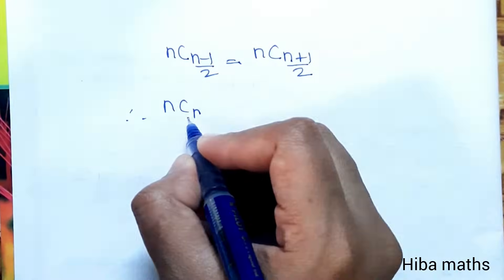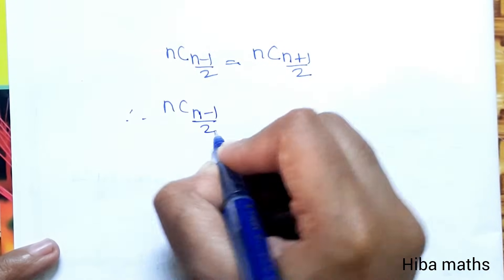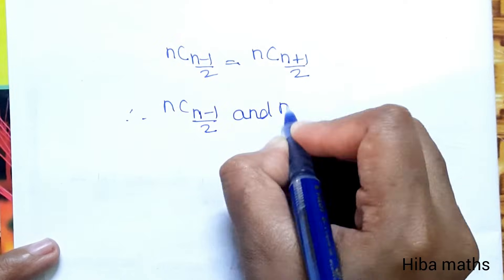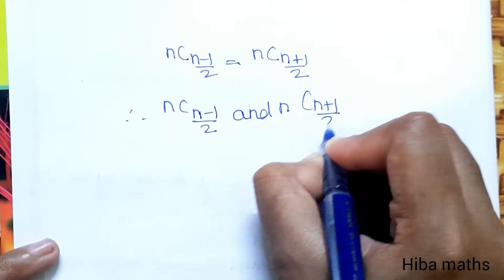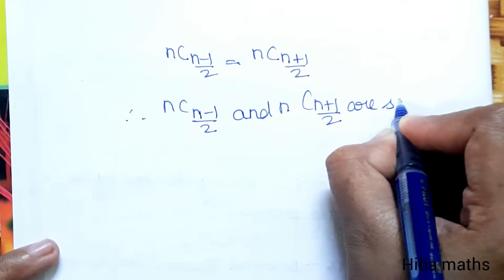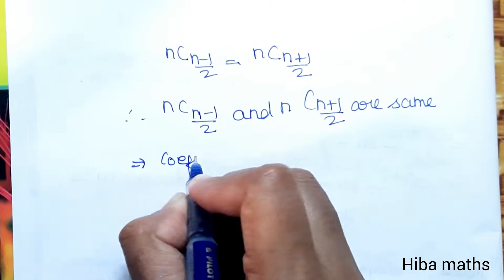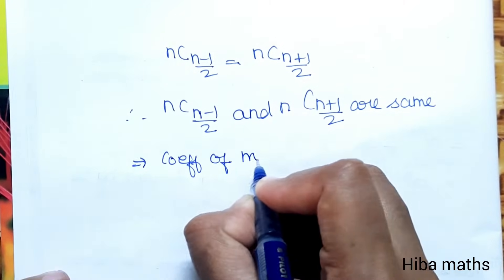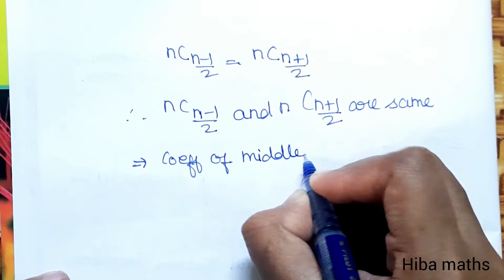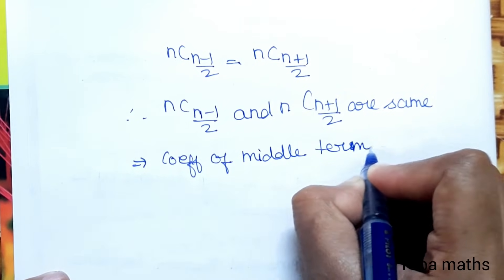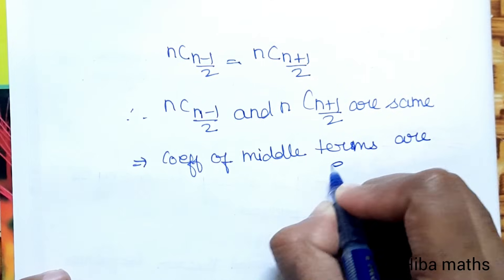Therefore, nC((n-1)/2) and nC((n+1)/2) are the same. Since we get these two coefficients are the same, the coefficients of the middle terms are equal. Hence proved.